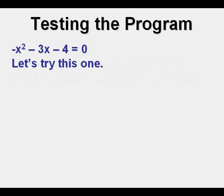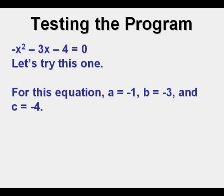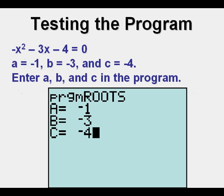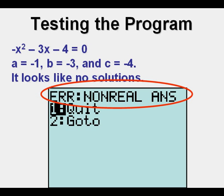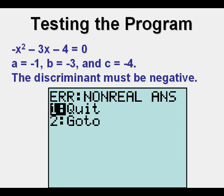Let's try another one: negative x squared minus 3x minus 4 equals 0. For this equation, A equals negative 1, B equals negative 3, and C equals negative 4. Enter negative 1 for A, negative 3 for B, and negative 4 for C in the program and press Enter. This error message response — 'non-real answer' — means there are no real solutions. For there to be no real solutions, the discriminant B squared minus 4AC must be a negative number.